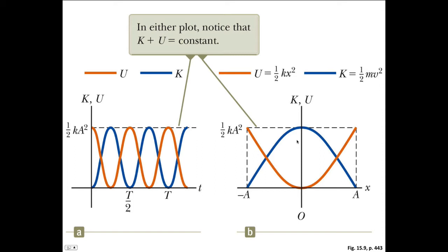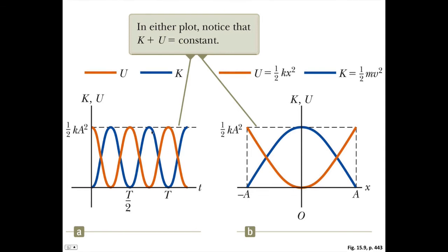These graphs show you the relationship between the potential energy and the kinetic energy. For this one, we've got the energy versus time graph. So when the kinetic energy is minimum, the potential energy is maximum, and you can see they're just inverting there.